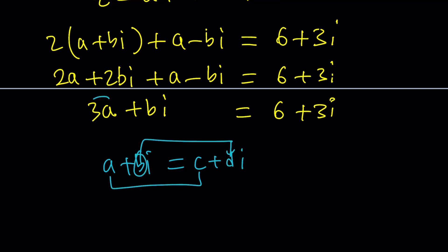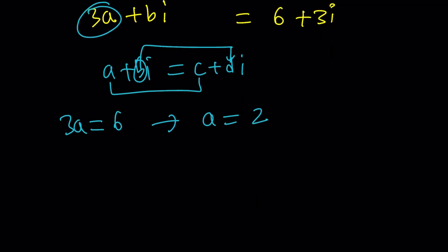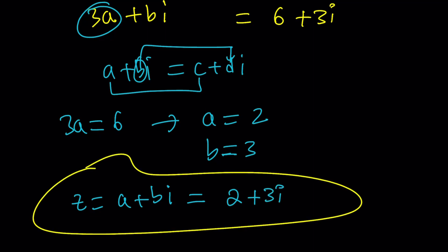So from here 3a is equal to 6 which means a is equal to 2 and b is equal to 3. Since we're looking for Z and Z can be written as a plus bi, the answer is going to be 2 plus 3i. So that would be the only solution to this equation. So let's go ahead and take a look at the second method.